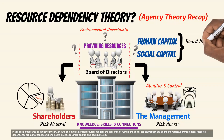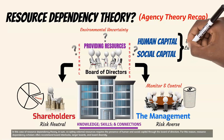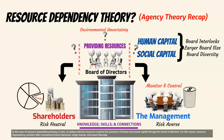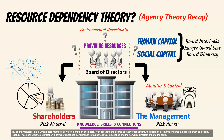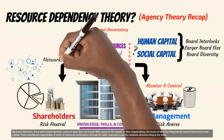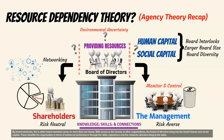For this reason, resource dependency scholars often recommend board interlocks, larger boards, and board diversity. Board interlocks refer to when board members serve on more than one board. With access to the boards of other organizations, the board of directors bring into the board human and social capital. This benefits the organization in terms of enhanced performance through the skills, experience, and networks directors bring to the table.